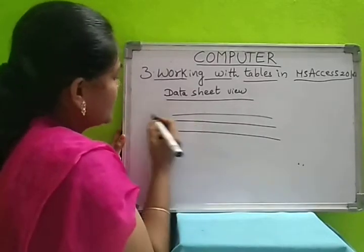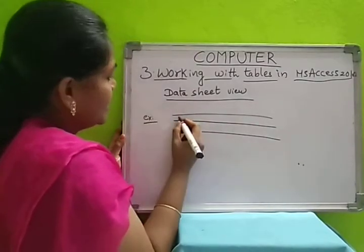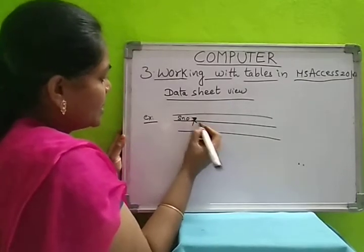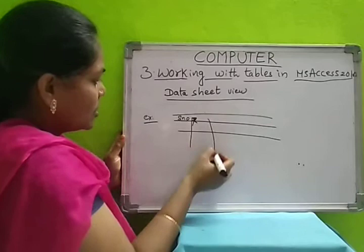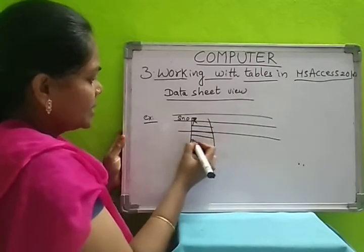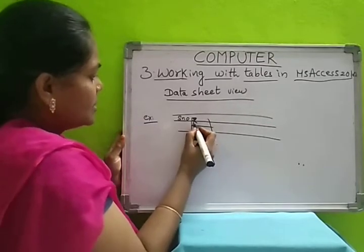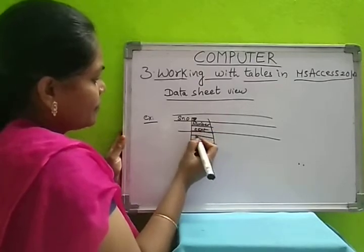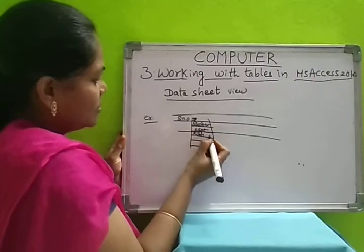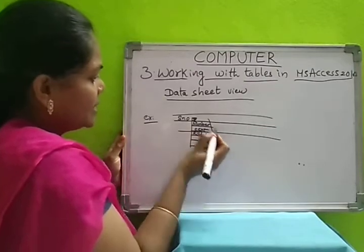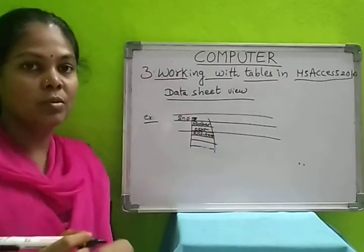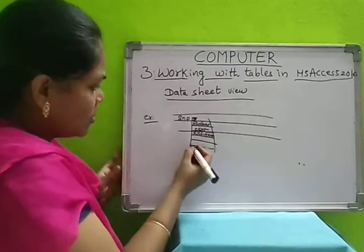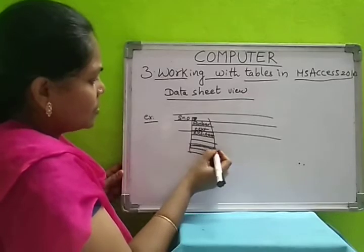For example, I am taking a student table. For student number, click on the dropdown arrow — a dropdown box will be displayed with different data types: numbers, small text, text, rich text. In last class we learned different data types: memo, attachments, hyperlinks, and others. All those will be displayed in this dropdown box and you can select whichever data type you want.